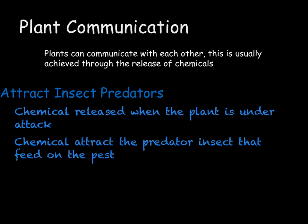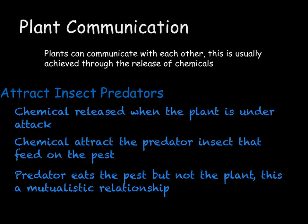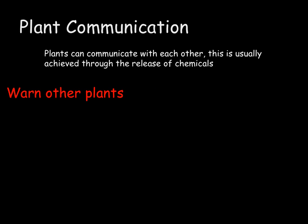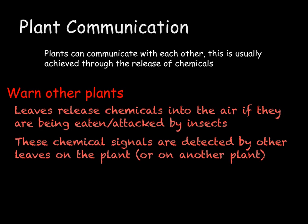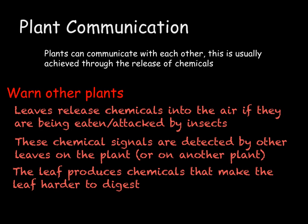So the predator gets the food and the plant gets rid of the pest. Some plants, such as the Venus flytrap and the pitcher plant, take this one step further and release a chemical that attracts insects, meaning they get stuck and the plant can digest them. Finally, some plants release chemicals that warn other plants in the area if they are under attack. Leaves that are being eaten by insects release pheromones into the air, which are picked up by other leaves on the same plant or on nearby plants, causing those leaves to produce chemicals that make them harder to digest and preparing the plant for attack.